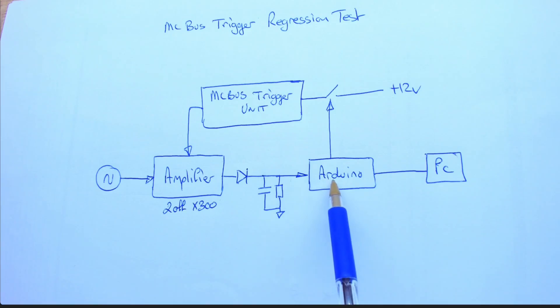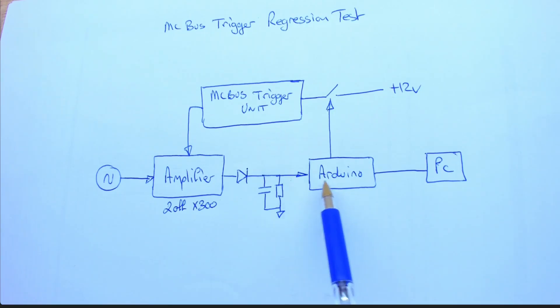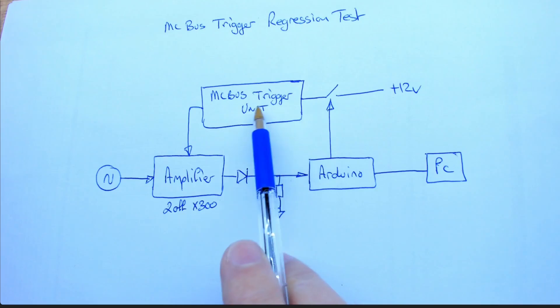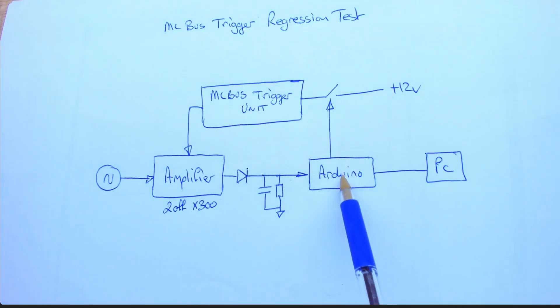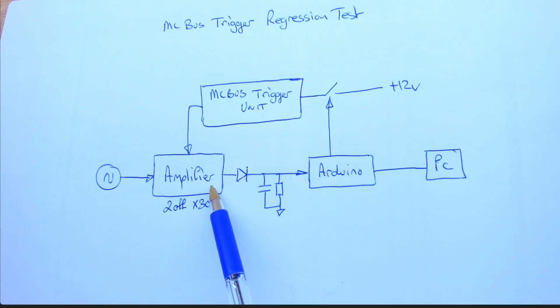We'll then feed that into another microcontroller. We'll use Arduino again. So we'll feed our logic into that and that will also control the power to our MC bus trigger unit. So this guy is going to know if that amplifier should be on or off, and it can measure whether it's on or off by looking at this logic line.